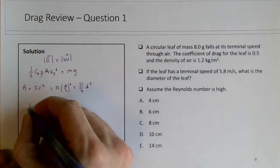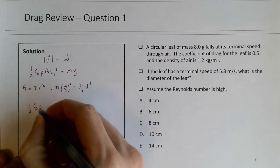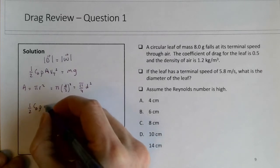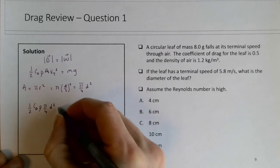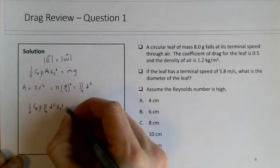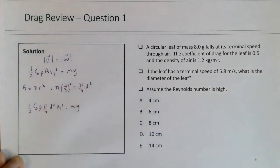So I have 1/2 of cd rho pi over 4 d squared vt squared equals mg. The 1/2 and the 1/4 here will become 1/8, so basically I'm going to try to isolate d.